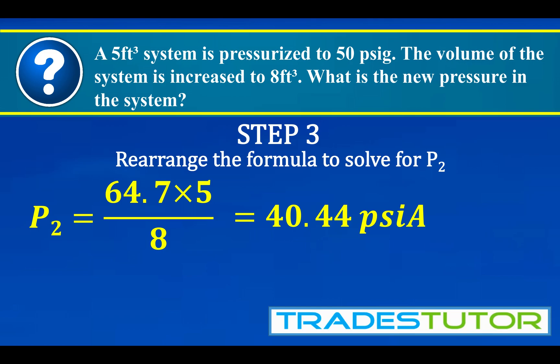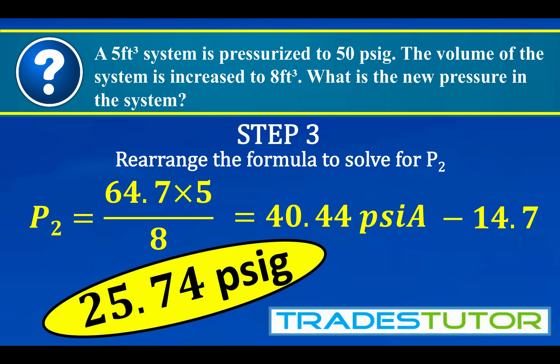Now, one thing to note here, that answer, as we put everything into the pressure into absolute in the start, well, the answer is in absolute. If we wanted to bring it back to gauge pressure, we'd have to minus the 14.7. And we would get 25.74 pounds per square inch gauge. And when you think about it, this makes sense. The volume has increased. The pressure has decreased. Kind of how the formula works.